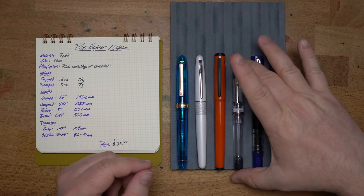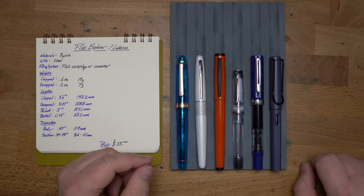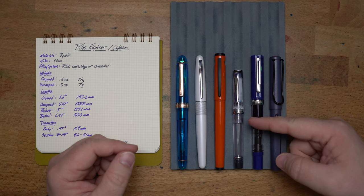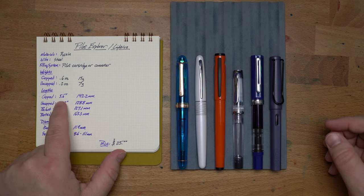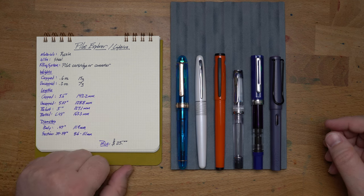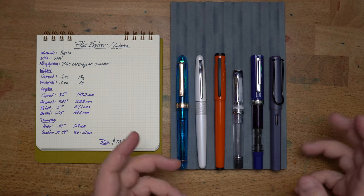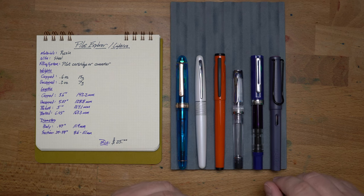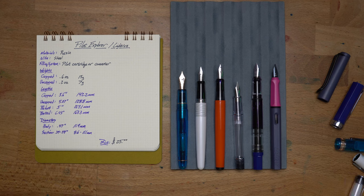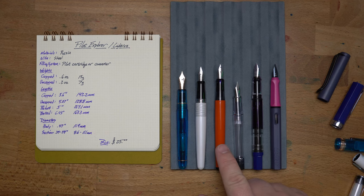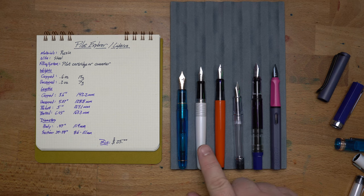The Pilot Prera, the TWSBI Eco, and the Lamy Safari. So as you can see this is a very normal sized pen. The Prera is a really small pen, but the rest of these are all pretty much in the same size spec there. Capped length of 5.6 inches or 142.2 millimeters. I'm going to go ahead and leave this here while I take off all these caps very quickly, at least in your reckoning. And let's see how these look with the caps off.